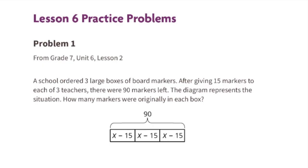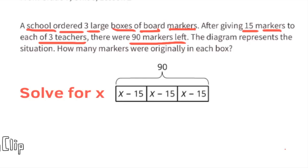From seventh grade Unit 6, Lesson 2: a school ordered three large boxes of board markers. After giving 15 markers to each of three teachers, there were 90 markers left. The diagram represents the situation. How many markers were originally in each box? We need to solve for x. We have x minus 15, three times, and that totals 90, so we can write that as 3 times x minus 15 equals 90.